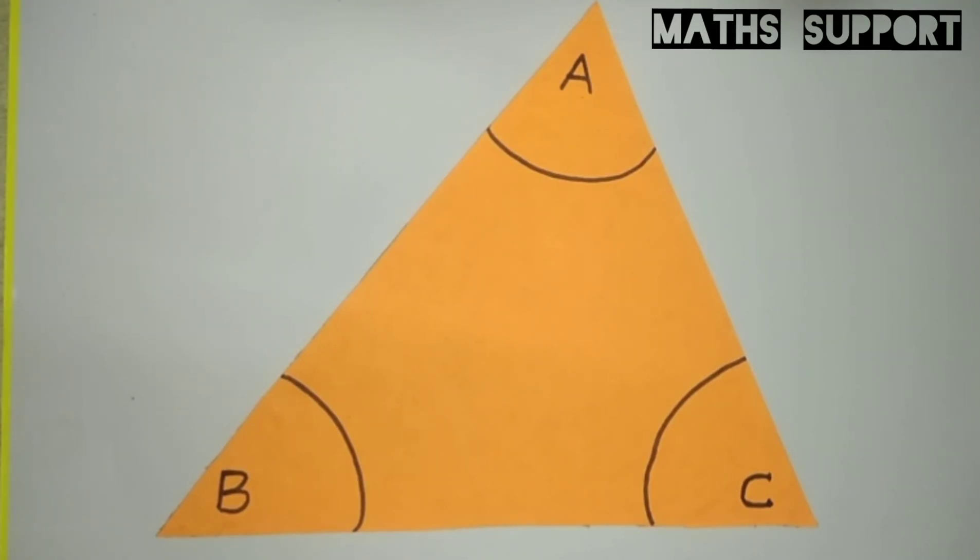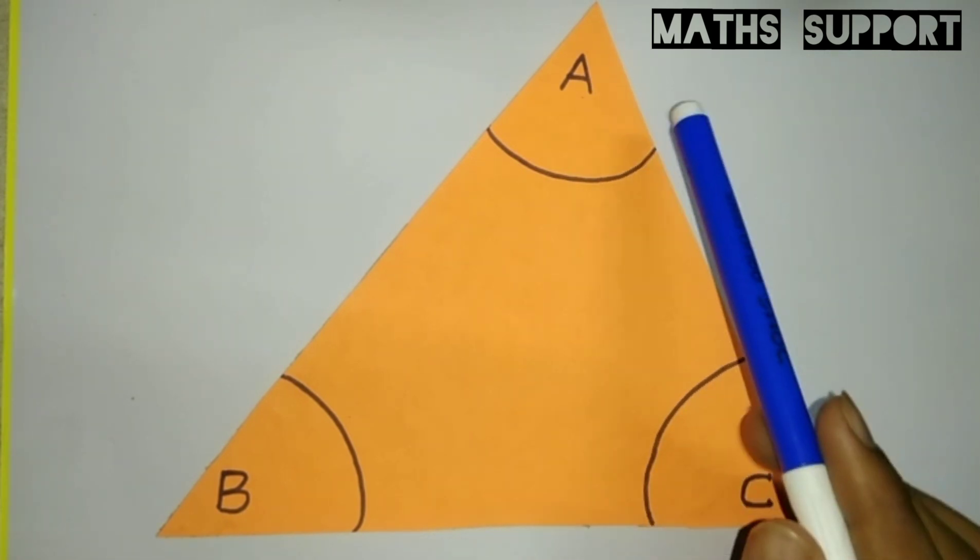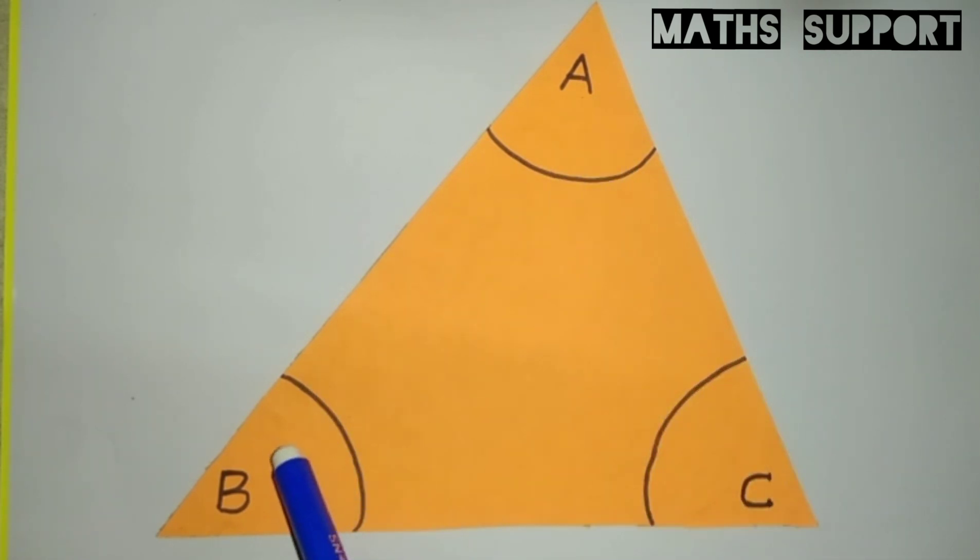Hello friends, for any triangle, generally we are taking angle sum property as 180. That means, if I am taking any triangle and adding the angles A, B and C, then it will sum up to 180.